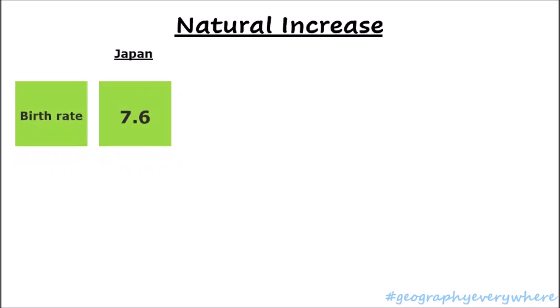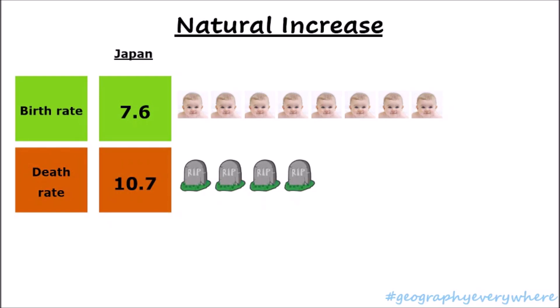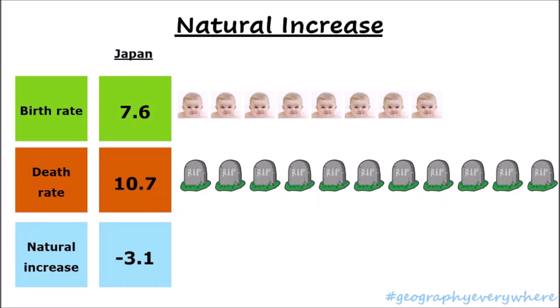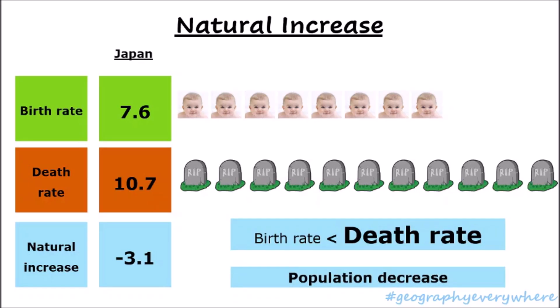Let's take a look at Japan now. Japan's birth rate was 7.6 — that means for every 1,000 people in Japan, 7.6 babies are born. The death rate is 10.7, meaning for every 1,000 people, 10.7 people are dying. If you work out the difference between these two numbers, you get minus 3.1, so the natural increase is negative. In Japan, there are a lot more deaths than births. If the death rate in a country is higher than the birth rate, more people are dying than children are being born, which means the population is decreasing. It's important to notice the negative number — this means the population is not growing but is slowly becoming smaller.